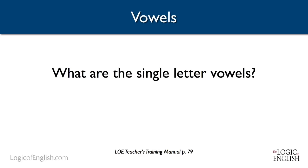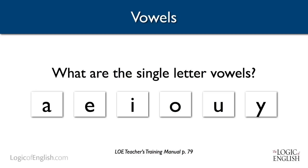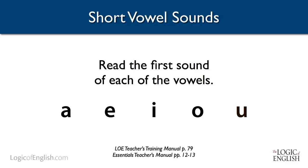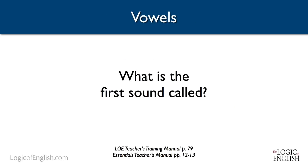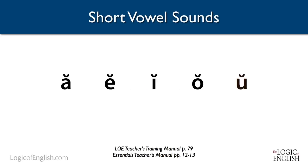So I have a question for you: what are the single letter vowels? Take a moment and write them on page 79 of your teacher's training manual. I hope you wrote A, E, I, O, U, and Y. Let's look at these a little closer. Let's first read the first sounds of the vowels — we'll leave Y off and come back to it later. So these say: a, e, i, o, u. Do you know what this first sound is called? It's called the short sound, and it's marked like this. Write the short vowels in your training manual on page 79.